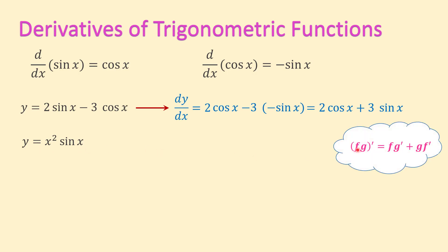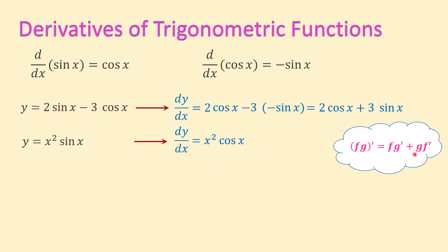Remember that the derivative of f times g equals f times g prime plus g times f prime — first function times derivative of second function, plus second function times derivative of first. So the derivative is x squared times the derivative of sine of x, which is cosine of x, plus sine of x times the derivative of x squared, which is 2x. We can rewrite this answer as x squared cosine of x plus 2x sine of x.